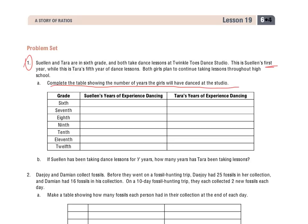I know this is Swellen's first year and this is Tara's fifth year. Each time I go down into the different grade levels, I'm going to add one year. You're going to see a big difference when we compare these two. When I look across at the number of years Swellen has compared to Tara — 1 to 5 — there's a difference of 4. And 2 to 6, there's a difference of 4. And 3 to 7, there's a difference of 4. So depending on who we're talking about, you either add 4 or subtract 4 based on what you're given.